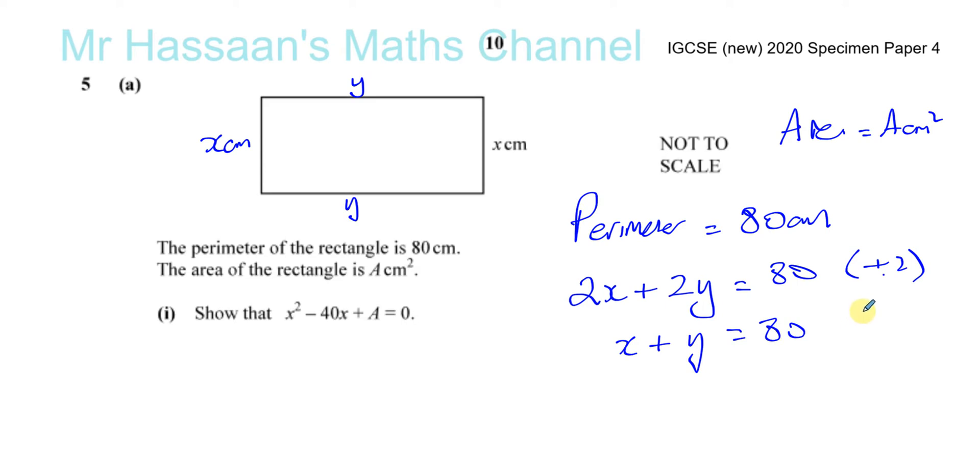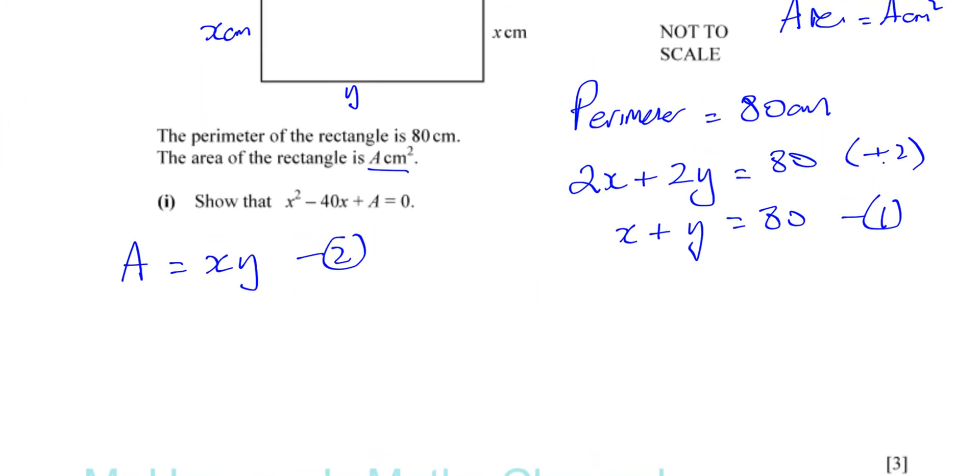Now, we're also told that the area of the rectangle is a. So the area we can write as the length times the width, which is x times y. So we have these two equations. The first one we've got there and this one over here. And how do we link them together? Well, one of the ways we can think is, I need an equation that has x and a in it. I don't want the y in it. So let me keep this equation as my base because this one has x and y. This one has x and a. I need the a. So there's no a in this equation.